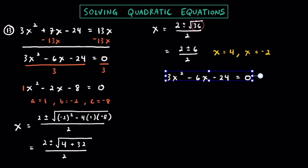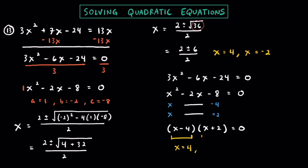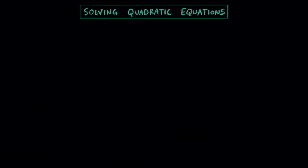Since we have two nice rational solutions, we could have factored instead. Also dividing by 3, and for x squared minus 2x minus 8, I'm thinking of negative 4 and positive 2 — those multiply to get negative 8 and combine to get negative 2x in the middle. So our two binomials are x minus 4 and x plus 2 equals 0, giving x equals positive 4 and x equals negative 2. Those are our two solutions.